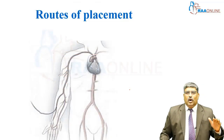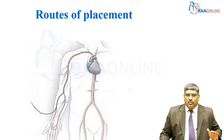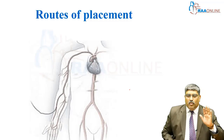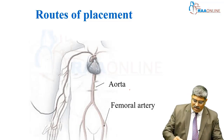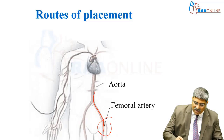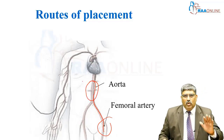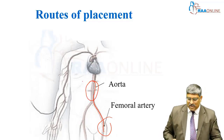Coming to the route of placement through which the stents go in — the most common site is the femoral artery. It passes through the iliac artery into the aorta. That is the most common route of endovascular placement.